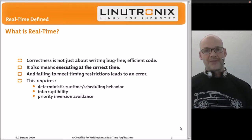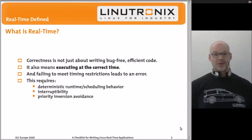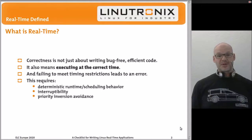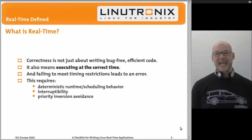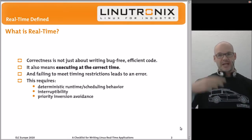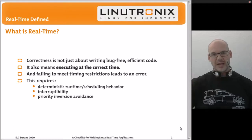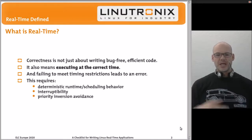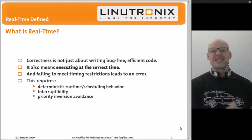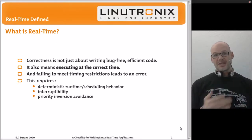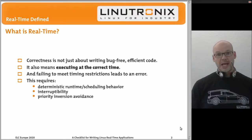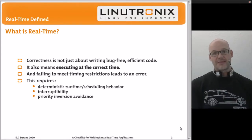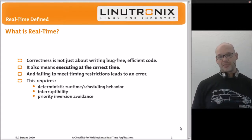For a real-time operating system, there are three main requirements. First, you need deterministic runtime or scheduling behavior — if a function could take microseconds or days, you have no chance of achieving low-latency real-time. Second, the system must be interruptible, so whenever a real-time task needs the CPU, it can kick off whatever is currently running. Third, you need a way to avoid priority inversion.